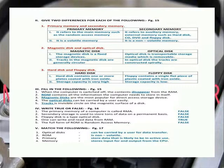Hard disk and floppy disk. Hard disk: hard disk contains one or more plates coated with iron oxide. Storage capacity is very high. Floppy disk: consists of single platters of plastic coated with iron oxide. Storage capacity is low.